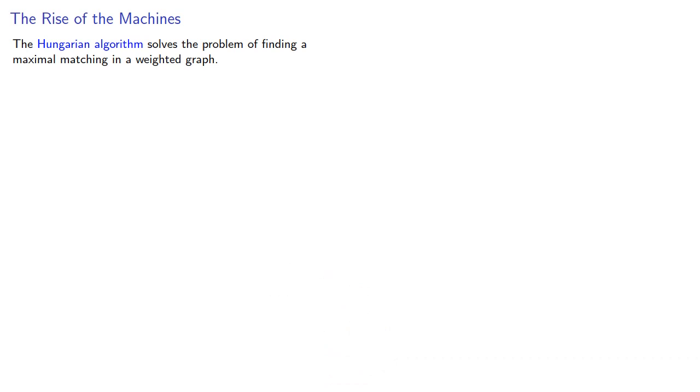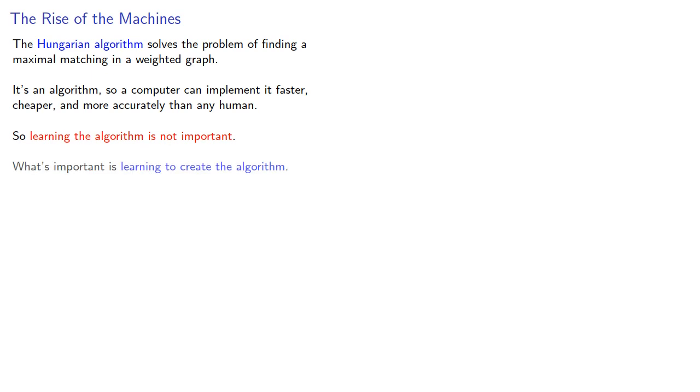The Hungarian algorithm solves the problem of finding a maximal matching in a weighted graph. It's an algorithm so a computer can implement it faster, cheaper, and more accurately than any human. So learning the algorithm is not important. What's important is learning to create the algorithm. While nobody can teach you how to be creative, you can create strategies to unlock your creativity, and one strategy is to see how others created solutions.